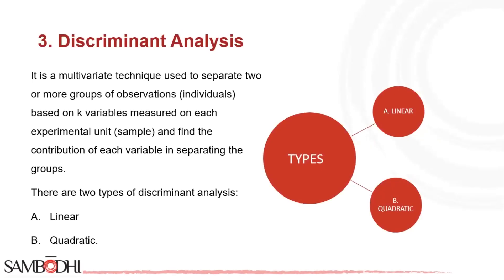Discriminant analysis is a multivariate technique used to separate two or more groups of observations (individuals) based on k variables measured on each experimental unit (sample) and find the contribution of each variable in separating the groups.